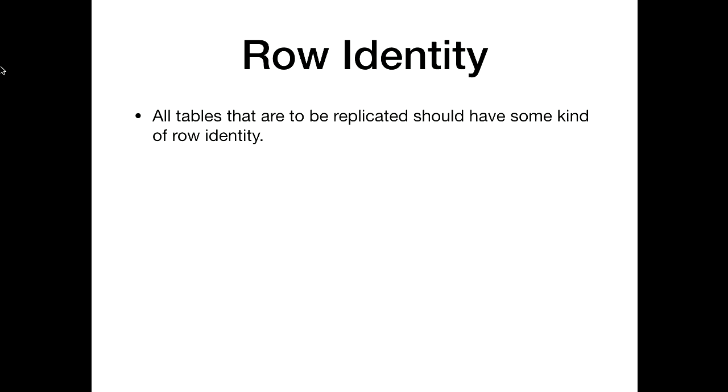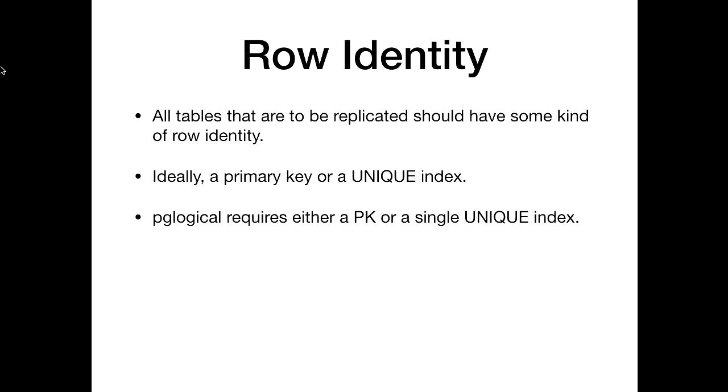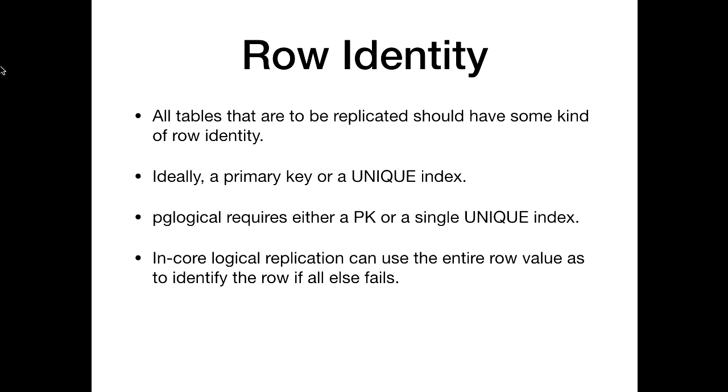In order to do this replication, rows need to have an identity. If you're just doing inserts, it doesn't matter, but if you're updating and deleting rows you have to be able to say which row. There's nothing inherent in Postgres that requires every row have a unique identity. A primary key or unique index is the ideal situation. PG Logical requires either a primary key or a single unique index — this restriction is being lifted in version 3, but that's not out yet. In-core logical replication can use the entire row value as the identity if all else fails, but that assumes every row is unique across all fields and that you're willing to have it run really, really slowly — it has to do a sequential search across the entire table every time.